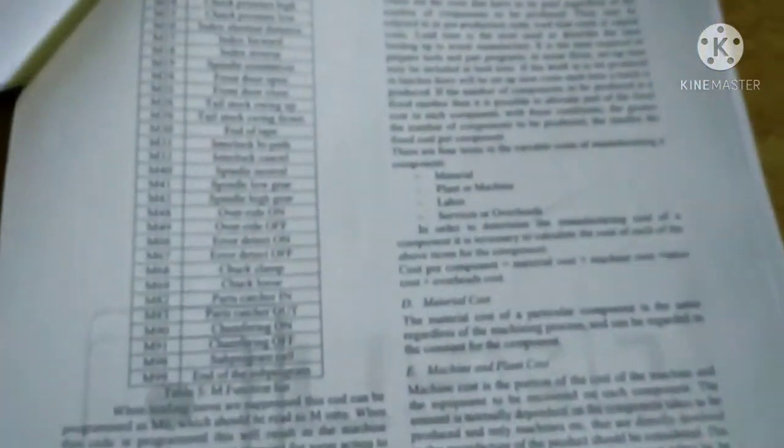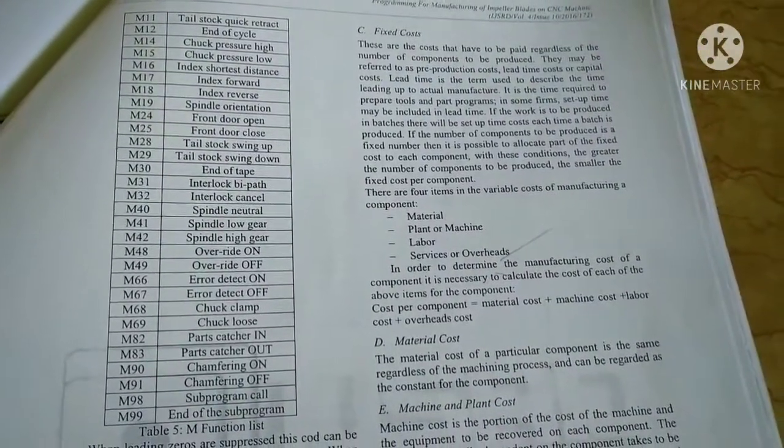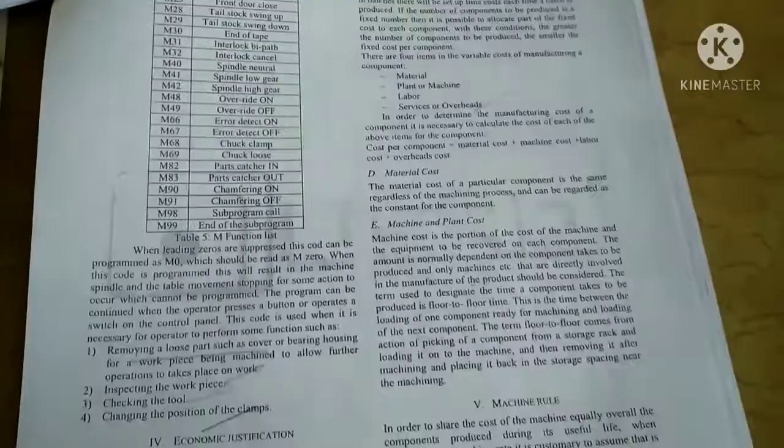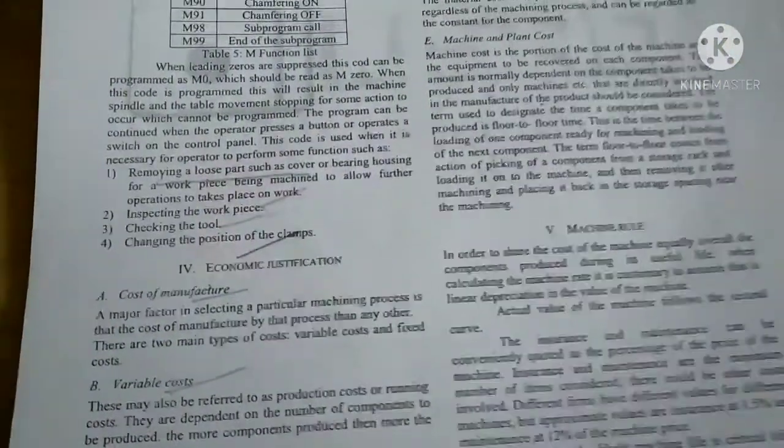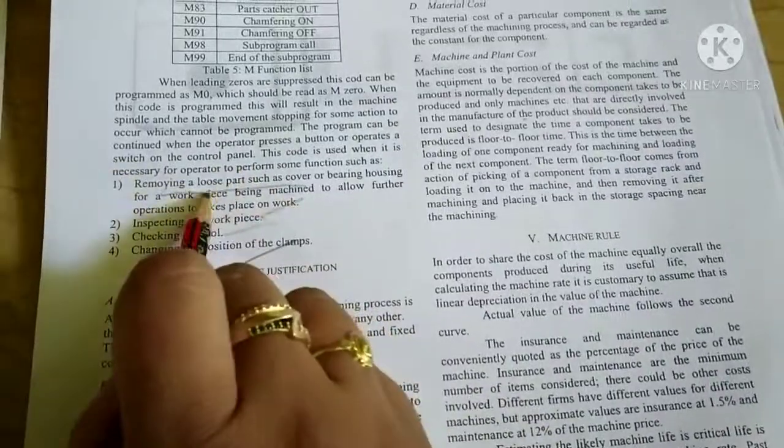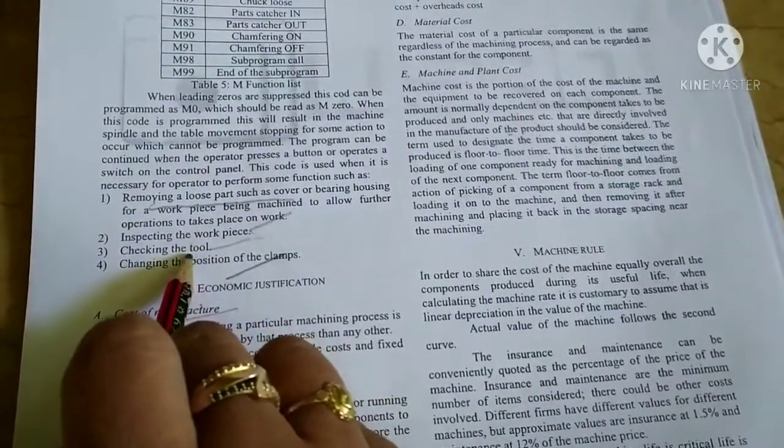If we want to write the program, first one is G-codes and next one is M-codes. M00 means program stop, and M01 is optional stop.